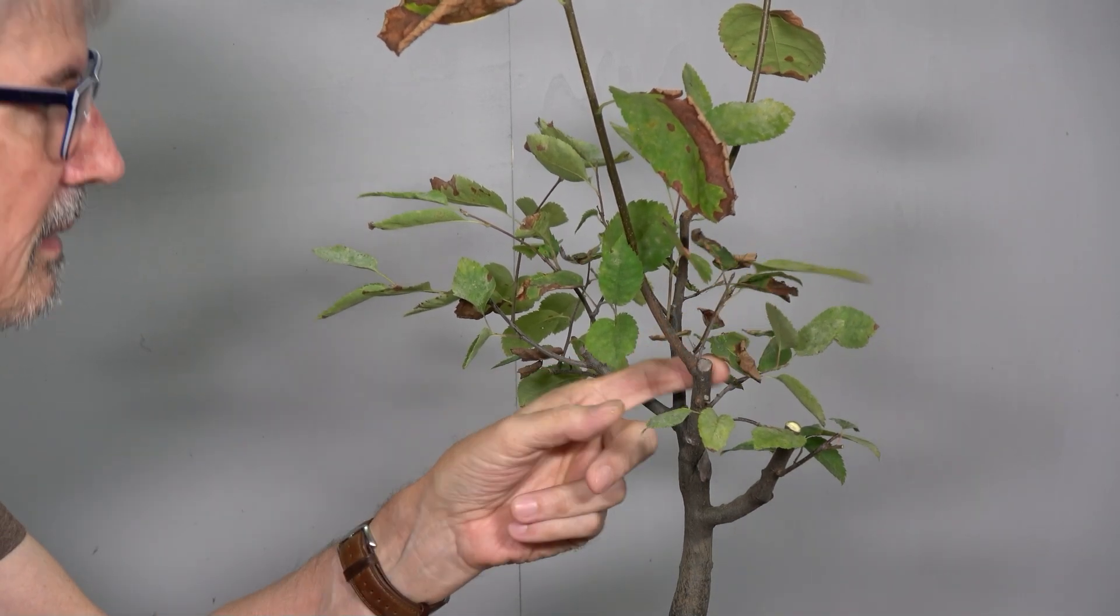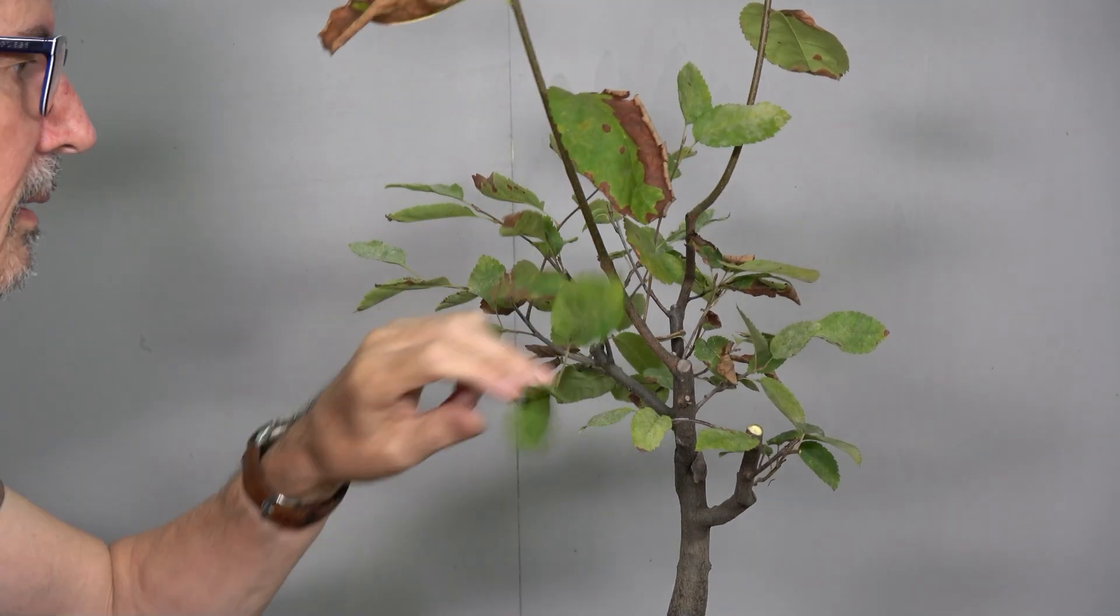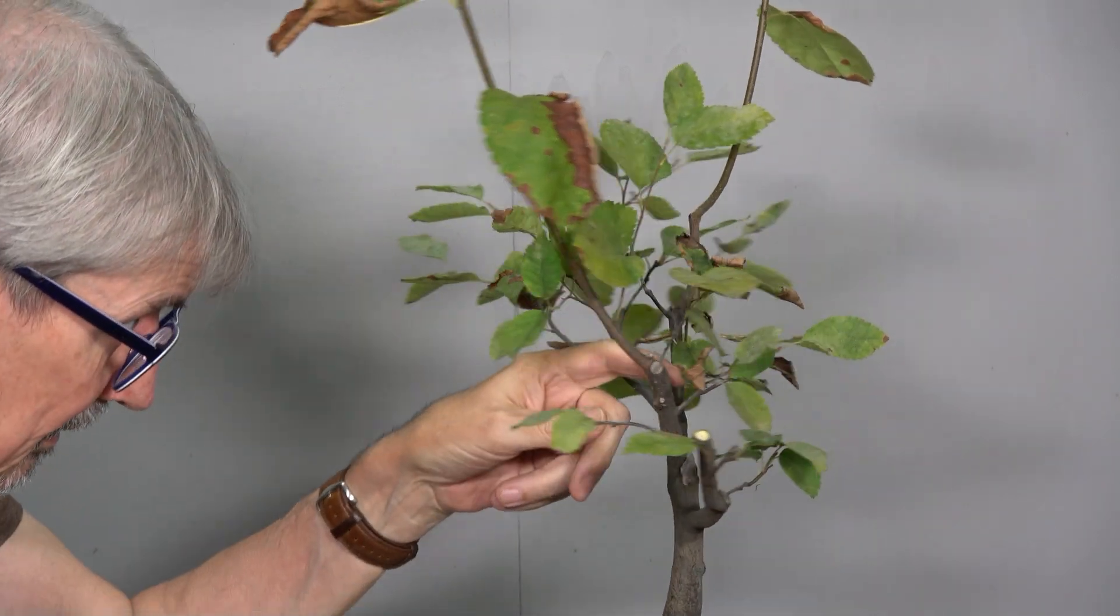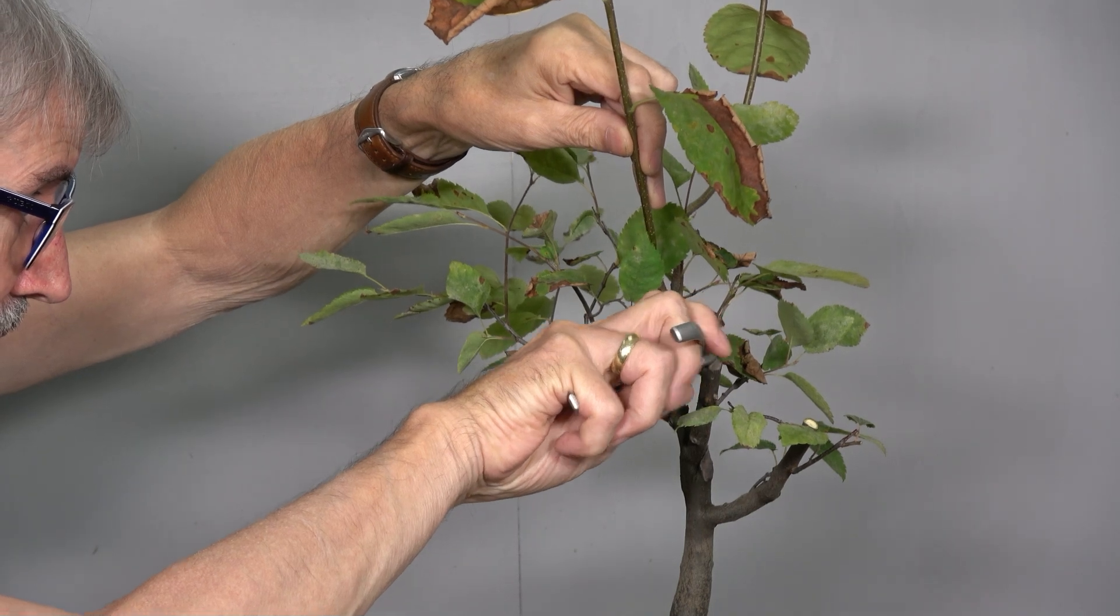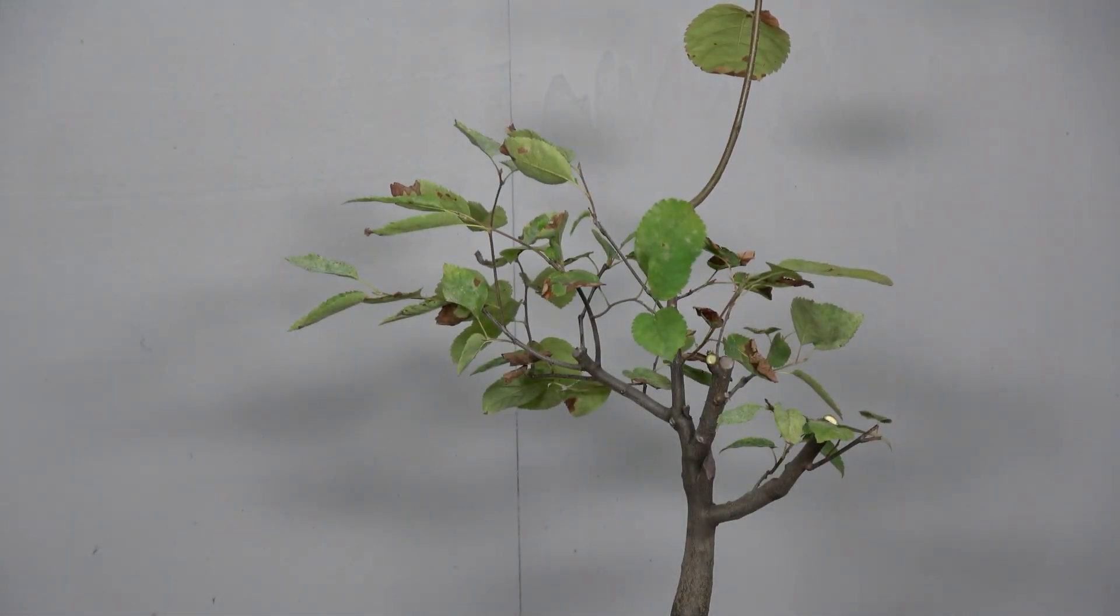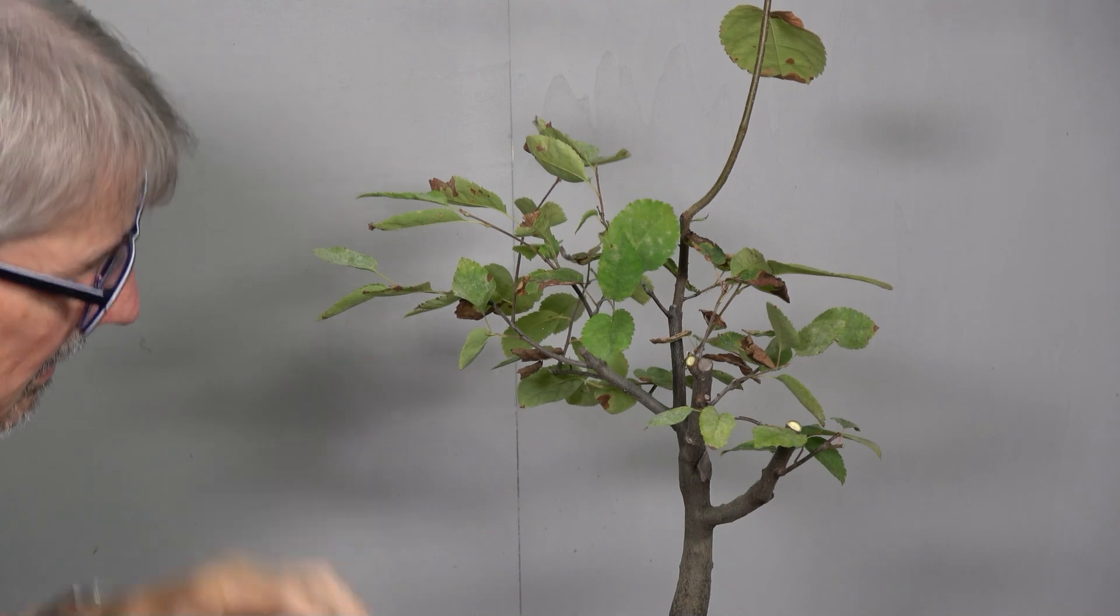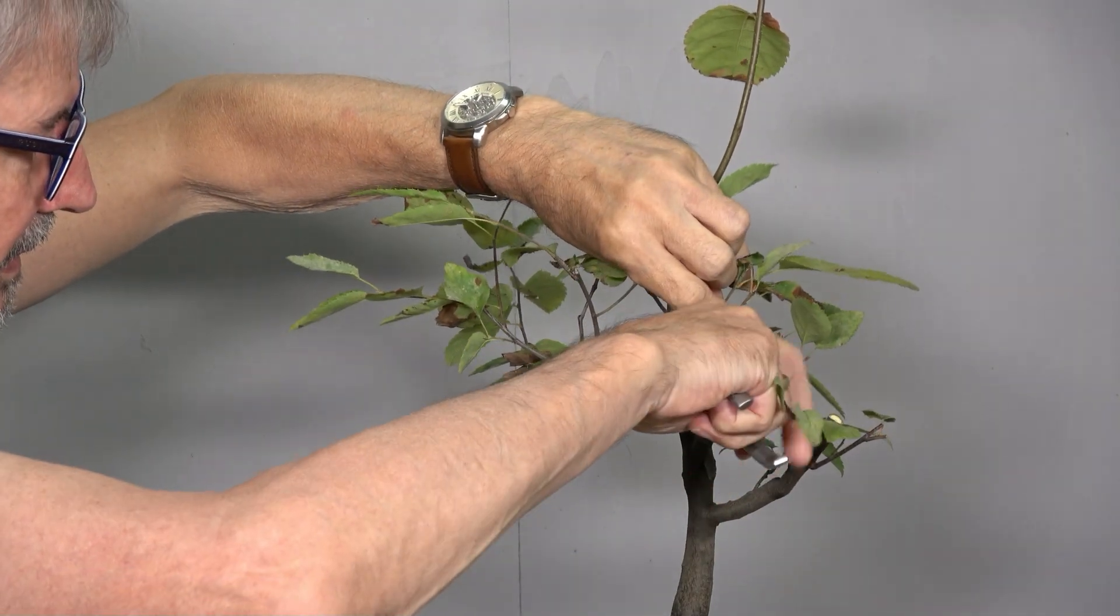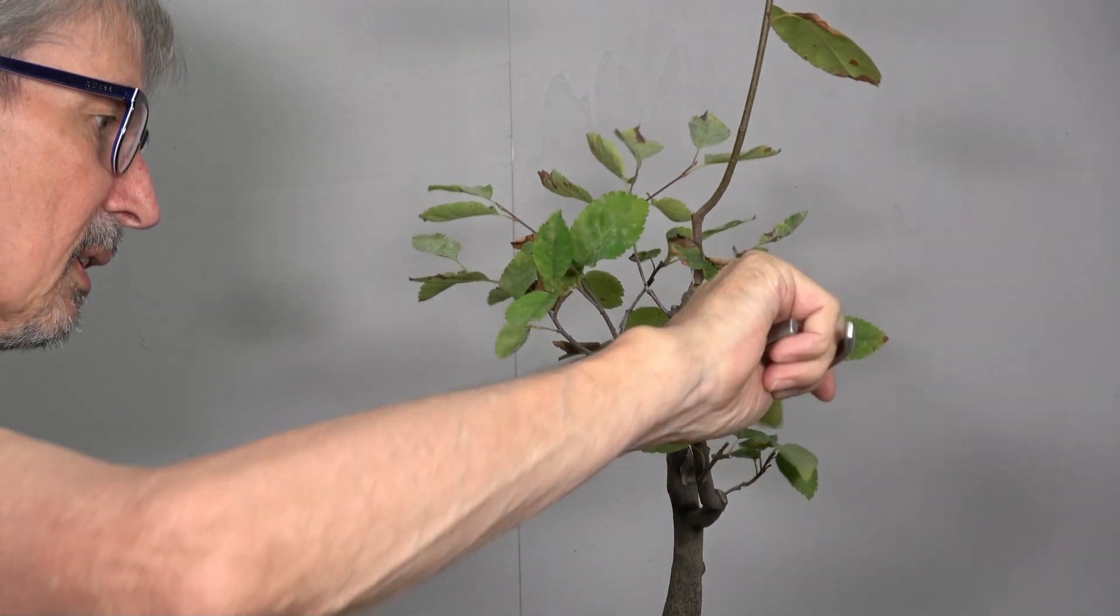Gut, dann haben wir hier der nächste. Ist auch wieder so ein langer. Ich sehe hier auch keine Triebe. Würde ihn jetzt einfach mal hier wegnehmen. In der Hoffnung, dass er da frisch austreibt. Werden mal sehen. Der wächst hier so rüber. Den lasse ich auch mal. Was mich mehr stört, ist der hier. Der wächst hier so in die anderen rein. Den nehmen wir raus. Unten haben wir noch so einen kleinen Stumpen.